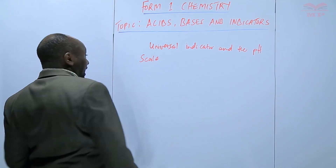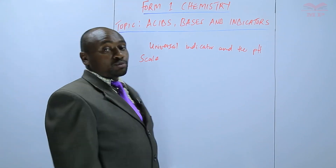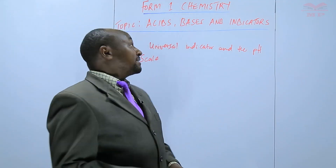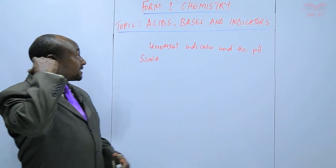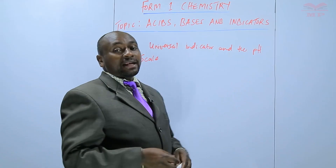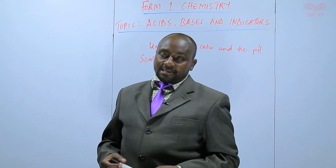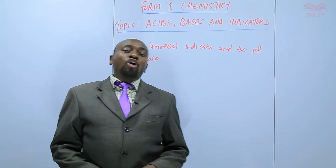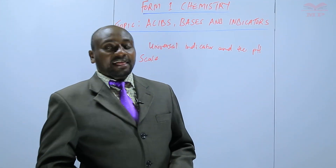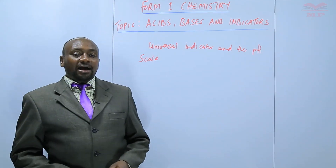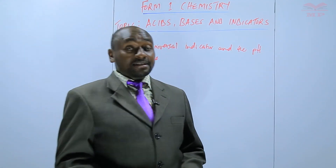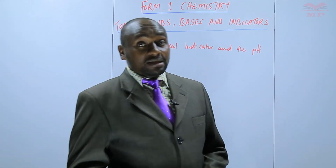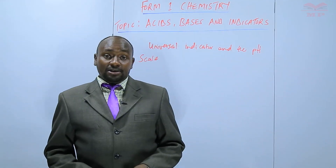Now, unlike other commercial indicators that we discussed in the previous lesson, we have another indicator called the universal indicator. This one is usually a mixture of several indicators, and it is the only indicator that tells us whether a solution is a strong acid or a weak acid, or whether a solution is a strong base or a weak base.